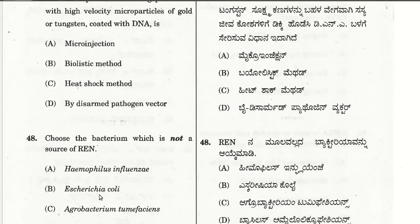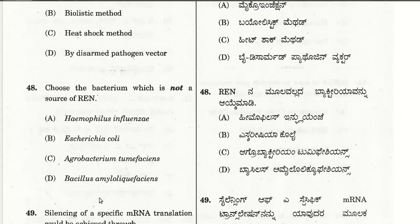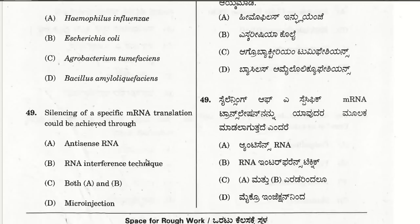The forty-eighth question: choose the bacterium which is not a source of restriction endonucleases. Agrobacterium tumefaciens is used for obtaining Ti plasmid, which is used in plant experiments. The forty-ninth question: silencing of a specific mRNA translation could be achieved through antisense RNA and RNA interference technique — both A and B are required, so C (both A and B) is the answer.